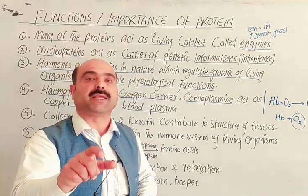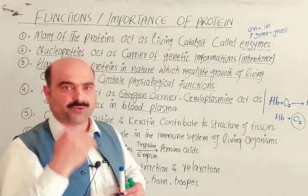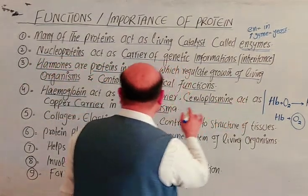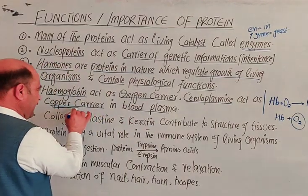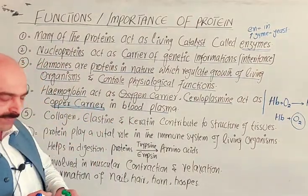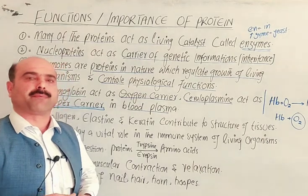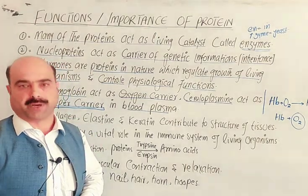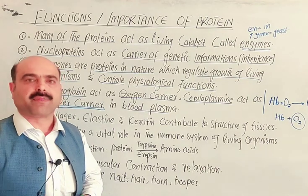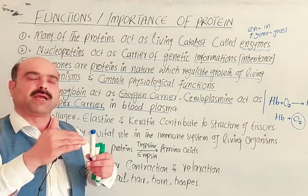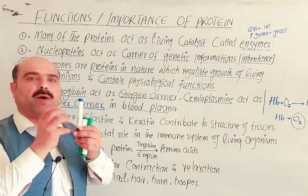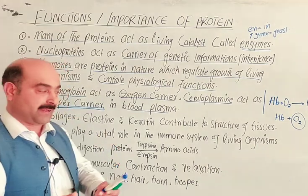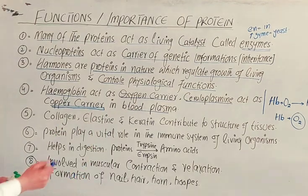Hemoglobin is an oxygen carrier. Ceruloplasmin is a copper carrier found in blood plasma. It carries various important substances in the human body. The copper carrier transports copper to various parts and cells of the body. When copper is required, it is released. So proteins serve as transportation carriers — for example, hemoglobin carries oxygen and ceruloplasmin carries copper and iron.